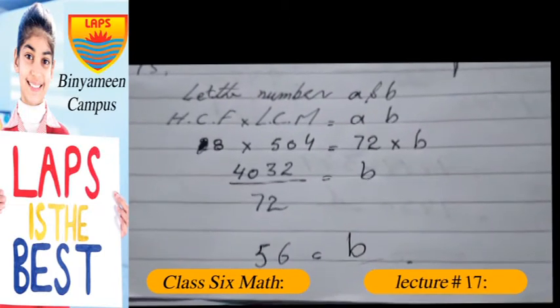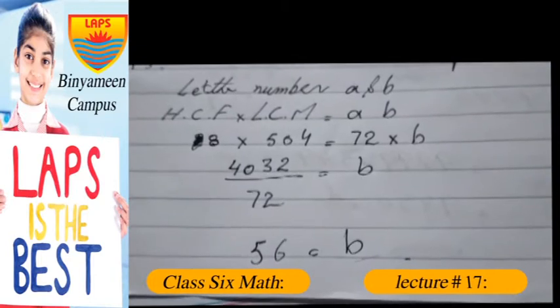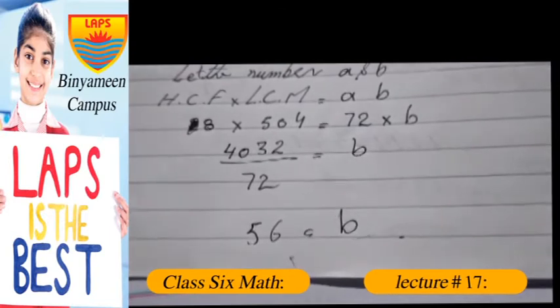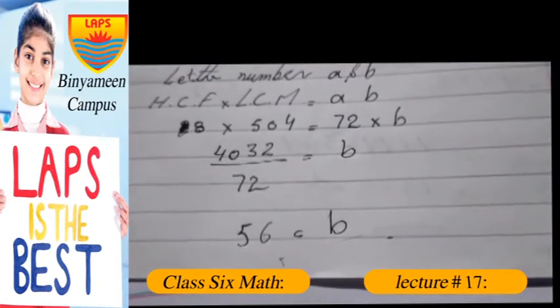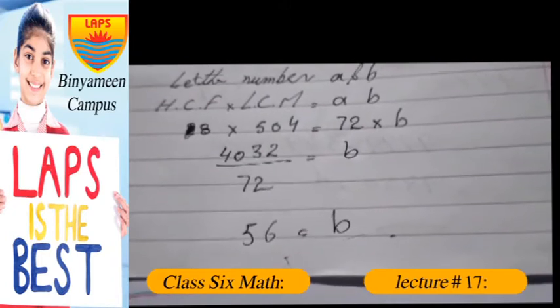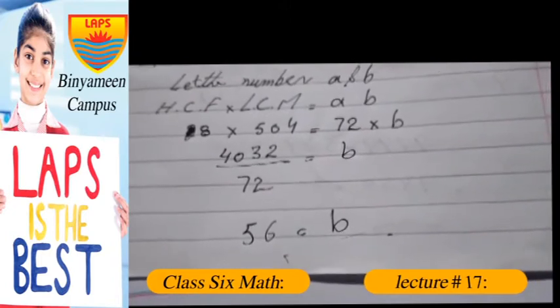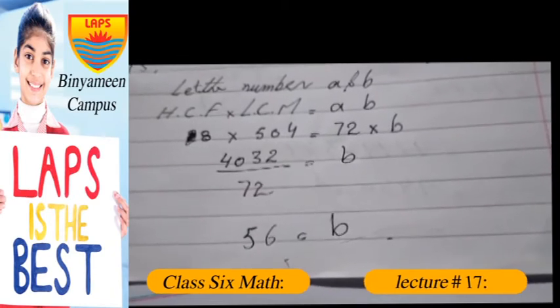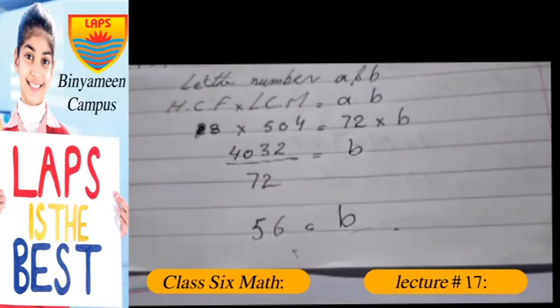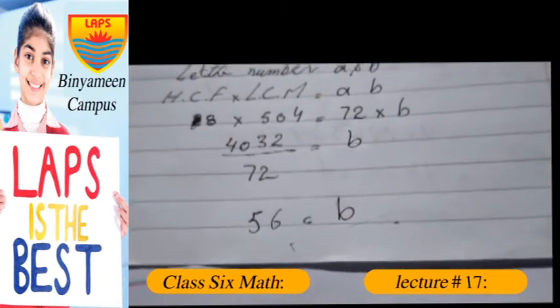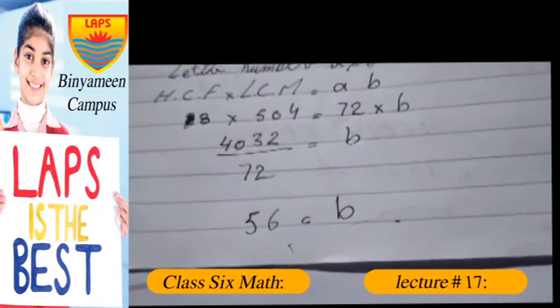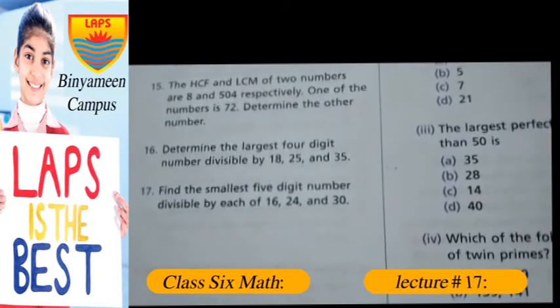8 multiplied by 504 is equal to 72 multiplied by B. Now the product of 8 and 504 is 4032, and 72 divides into B. Therefore, 4032 divided by 72 gives the other number is 56.